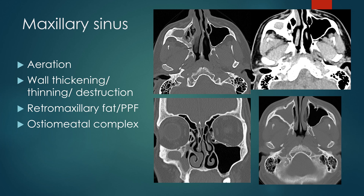When discussing the sinus, you evaluate the degree of aeration. This left maxillary sinus is well aerated. The right maxillary sinus is opacified with soft tissue density material. There's associated bony wall thickening, which usually is related to chronic sinusitis. You will also evaluate the sinus for wall thinning with a process such as a mucocele, which opacifies and expands the sinus, or bone destruction, which suggests a more aggressive process. This is a completely opacified sinus with chronic bony wall thickening, suggesting a chronic sinusitis process.